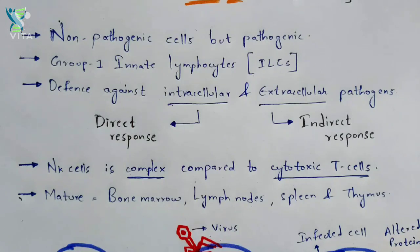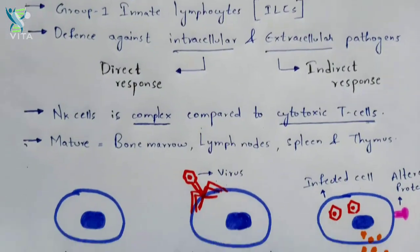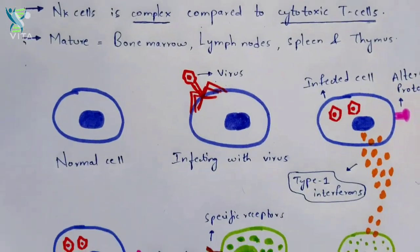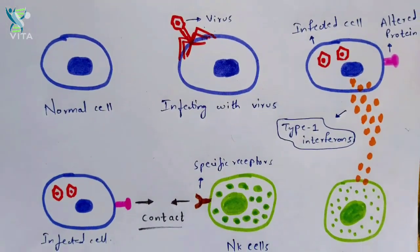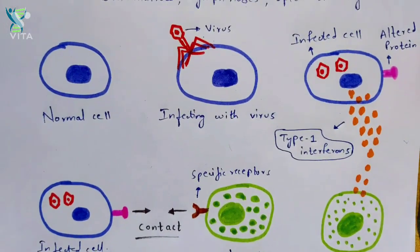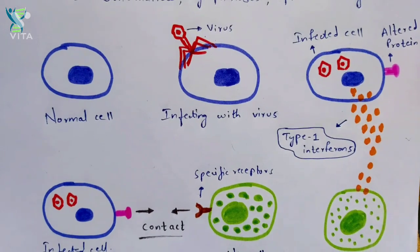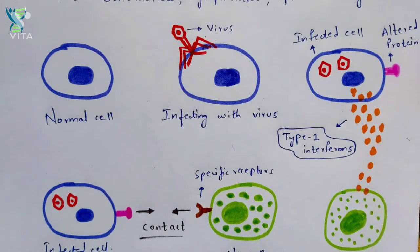That is the theoretical part. Now let us understand the diagrammatic part, which will make you clearly understand what the function of natural killer cells is. Wherever you learn, the diagrammatic part will definitely make sense so that you can clearly understand what is actually going on.